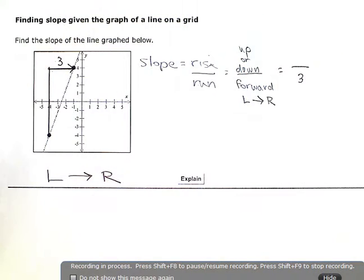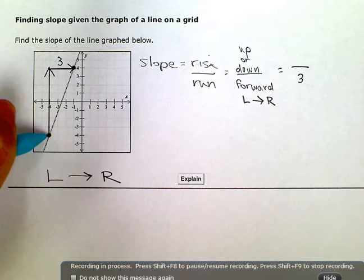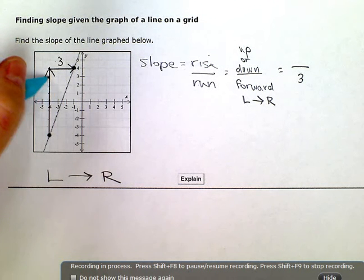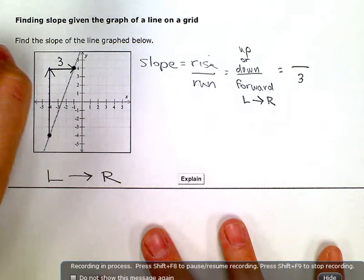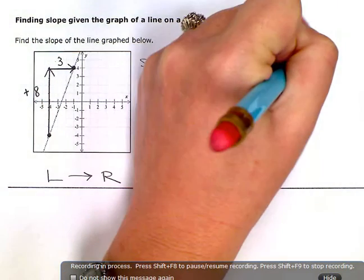And my rise is going up. So one, two, three, four, five, six, seven, eight. It's going eight units up. So this is going to be a positive eight on top.